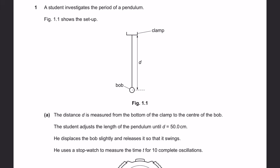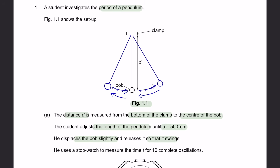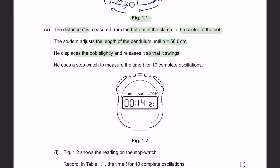Question 1. A student investigates the period of a pendulum. Figure 1.1 shows the setup. The distance d is measured from the bottom of the clamp to the center of the bulb. The student adjusts the length of the pendulum until d equals 50 centimeters. He displaces the bulb slightly and releases it so that it swings. He uses a stopwatch to measure the time t for 10 complete oscillations.